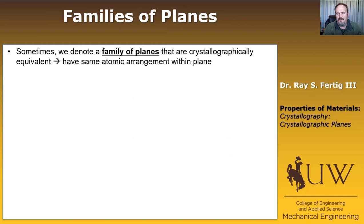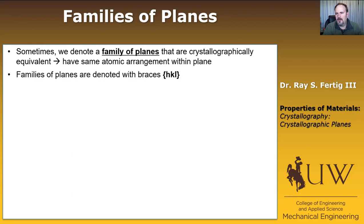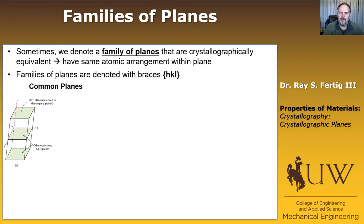Sometimes we want to denote a family of planes, just as we did with directions. Planes in a family have the same atomic arrangement within the plane, and we denote these families with braces {hkl}. A single plane uses parentheses; a family uses braces. Here is a 001 plane — equivalent planes obtained just via translation are still referred to as the 001 plane and don't need the special family notation.